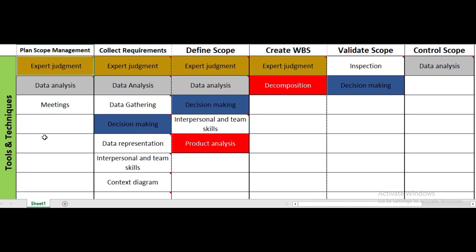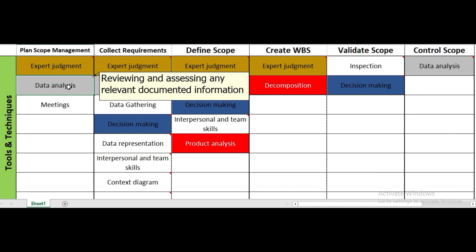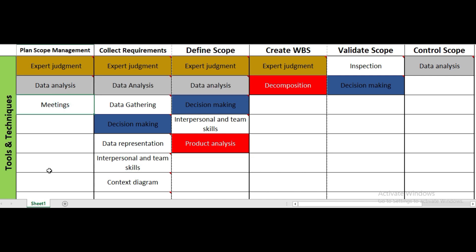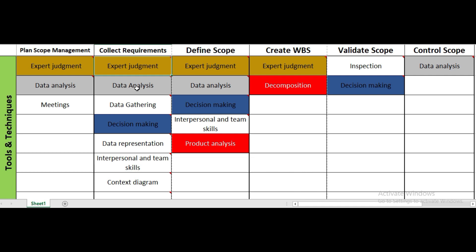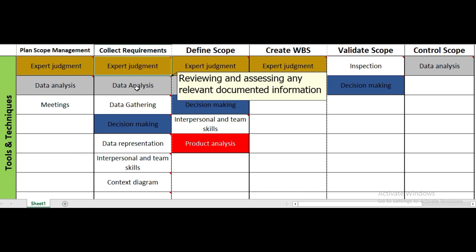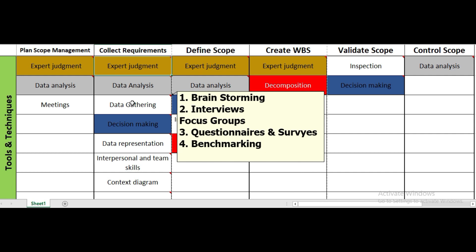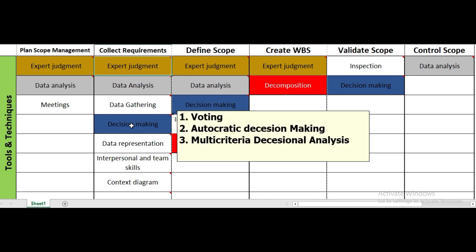In plan scope management, the tools and techniques are expert judgment, data analysis — which involves reviewing and assessing all documents related to scope management — and meetings to develop the scope management plan. In collect requirements, we use expert judgment, data analysis, and data gathering methods such as brainstorming, interviews, focus groups, questionnaires, surveys, and benchmarking. Decision-making techniques include voting, autocratic decision-making, or multi-criteria decision analysis.